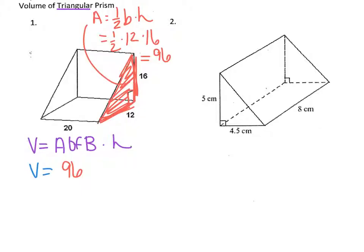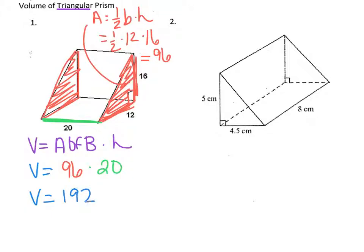The next thing we have to do is find the height. In this case, the figure is not sitting on the base, so you need to picture: if we were to pick this figure up, turn it, and set it on the triangle, how tall would it be? Another way to think about height is the distance between the bases. Here's the other base — how far apart are the bases? They are 20 units apart, so our height is 20. We do 96 times 20 and end up getting 1920. Since no unit is given, we write cubic units.